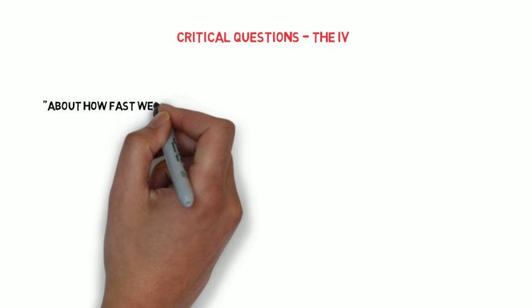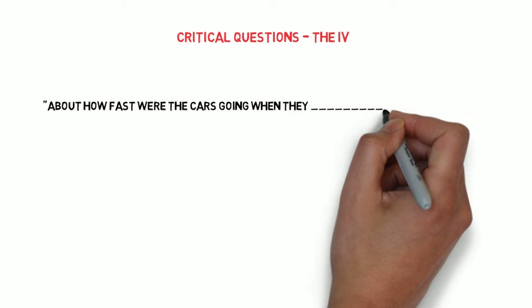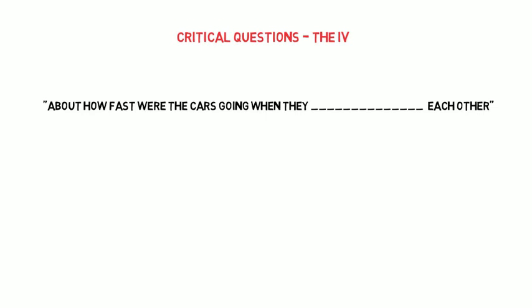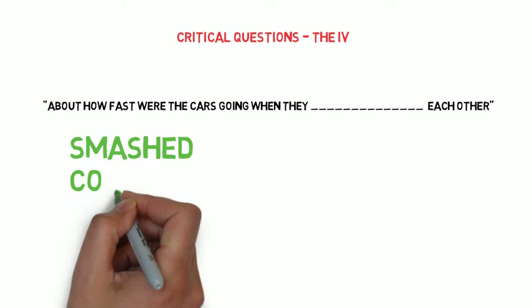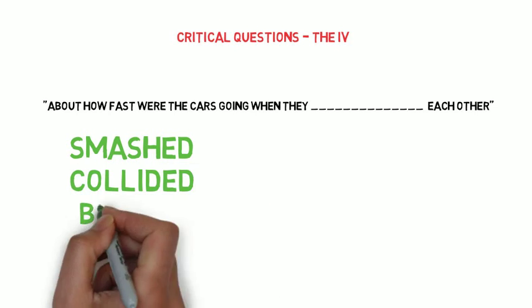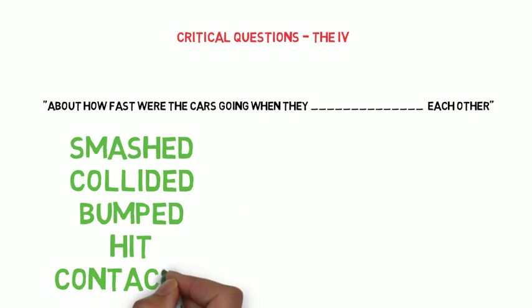So we just kind of set them out. So it was something along the lines of about how fast were the cars going when they somethinged each other. Remember, there were five different groups. So five variations: smashed, collided, bumped, hit, and finally contacted.